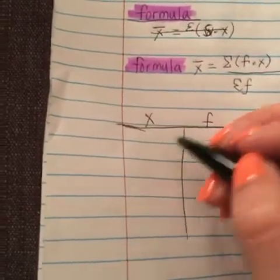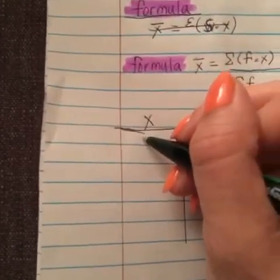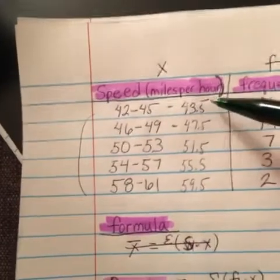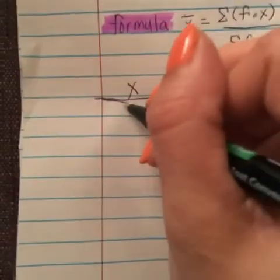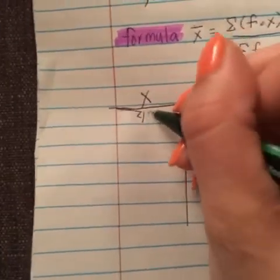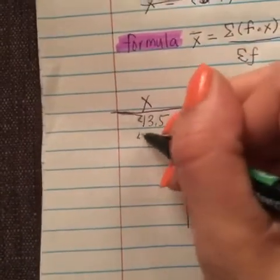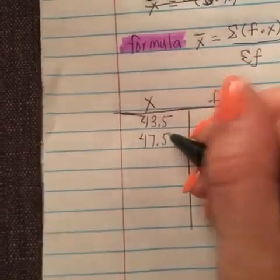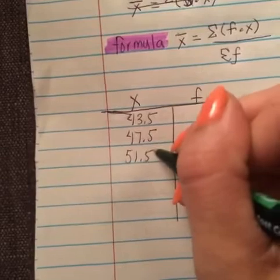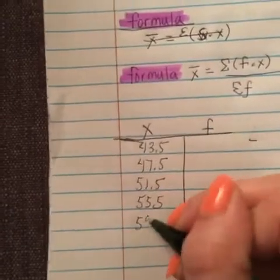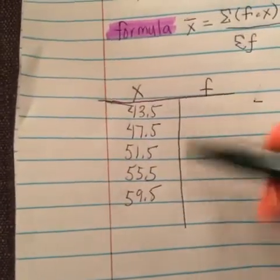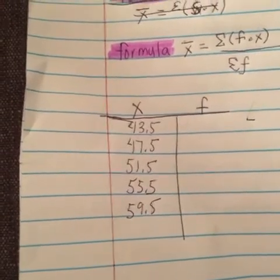We'll fill in here the midpoint for each of those values. Instead of putting these values in, we will put these values in which are all the midpoints because those are the numbers that we are now working with. So we have 43.5, 47.5, 51.5, 55.5, and 59.5.